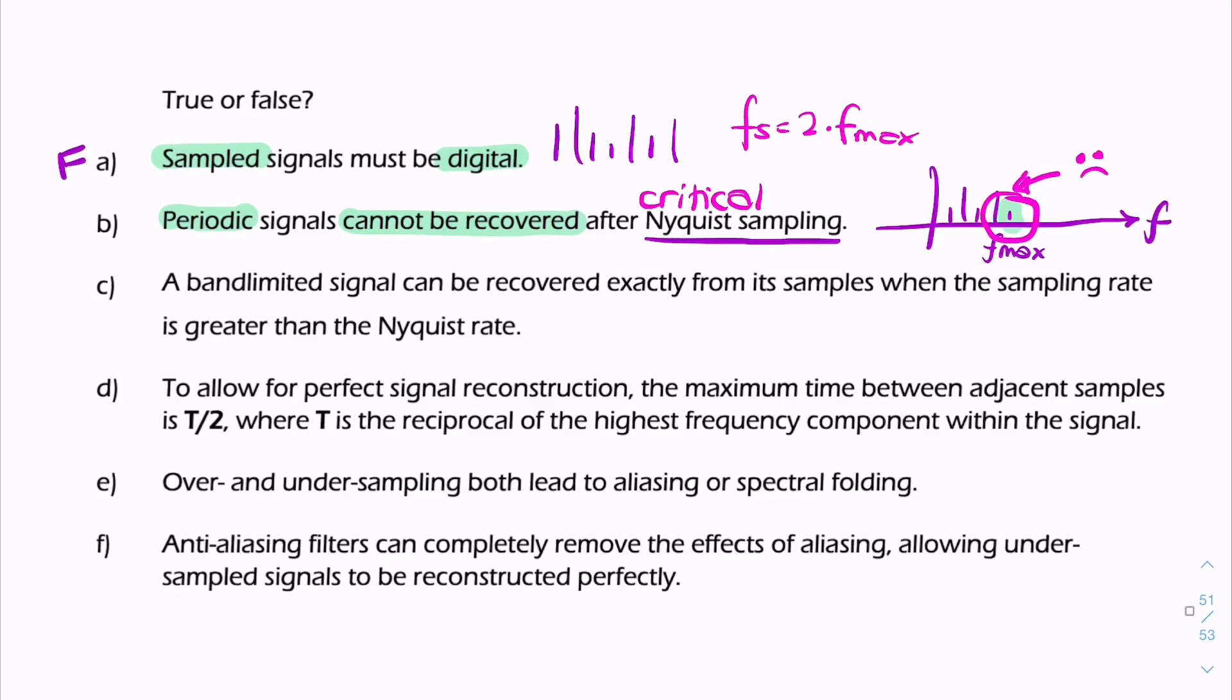It's not possible to have a low-pass filter that can separate the message from the first replica. So periodic signals cannot be recovered if you're going to critically sample. So that second statement is true.